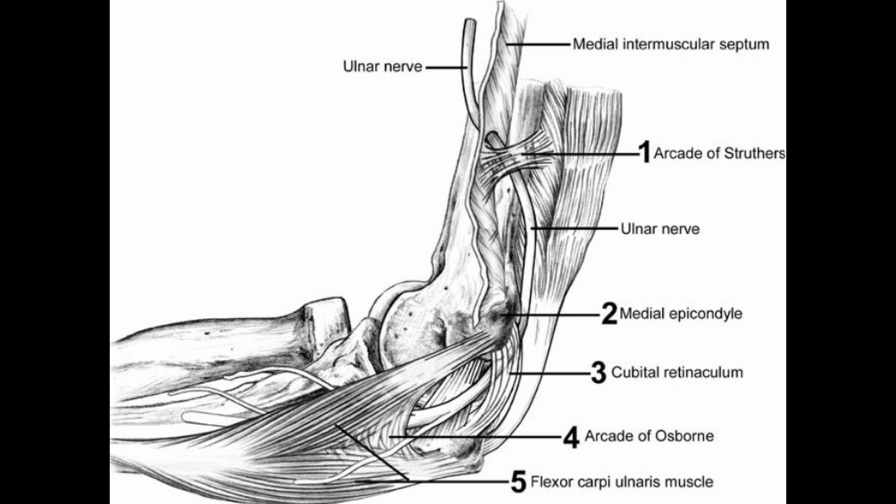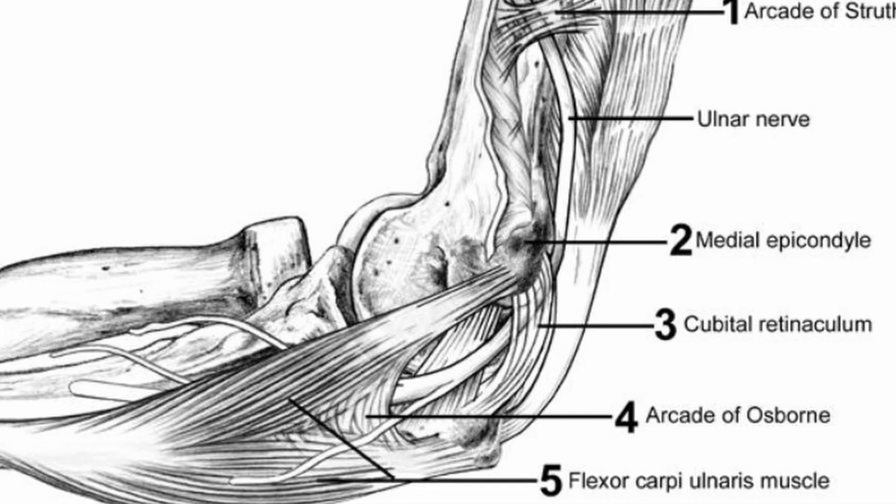The cubital tunnel is a passageway in the medial aspect of the elbow through which the ulnar nerve passes. The boundaries of the cubital tunnel are as follows: medially, the medial epicondyle of the humerus; laterally, the olecranon process of the ulna; roof, the Osborne's ligament and fascia; floor, the elbow joint capsule and the medial collateral ligament.